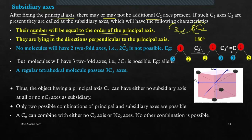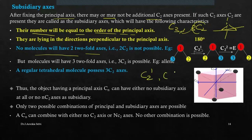The subsidiary axes lie in directions perpendicular to the principal axis. In BF3, the principal axis is perpendicular to the molecular plane, and the subsidiary axes lie in the plane — perpendicular to the principal axis. Also, no molecule can have exactly two twofold axes because two C2s applied together give E, so no molecule will have exactly two C2 axes.